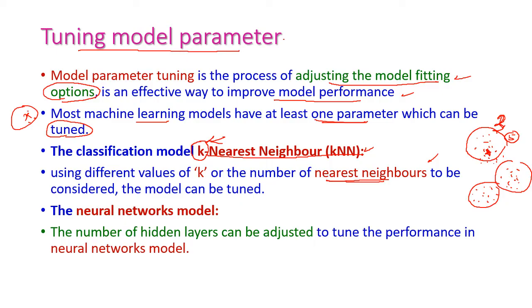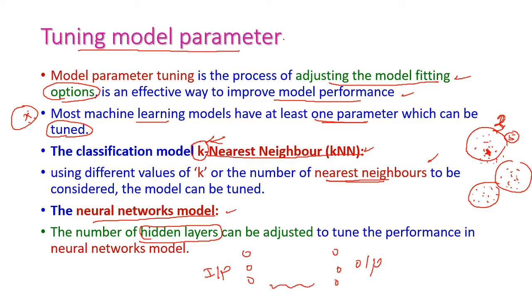Another example is the neural network model, where the number of hidden layers may be adjusted. In a neural network, three layers are important: the input layer, the output layer, and the hidden layers. At least one hidden layer must be present. If we adjust the number of hidden layers, the model performance will definitely get improved.